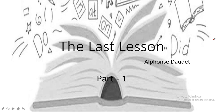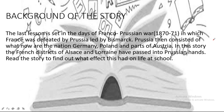Before I move to the chapter, let me give you the background of this story which will enrich your understanding. The Last Lesson is set in the days of the Franco-Prussian War of 1870-71, in which France was defeated by Prussia, led by Bismarck. Prussia then consisted of what are now Germany, Poland, and part of Austria. In this story, the French districts of Alsace and Lorraine have been passed into Prussian hands.